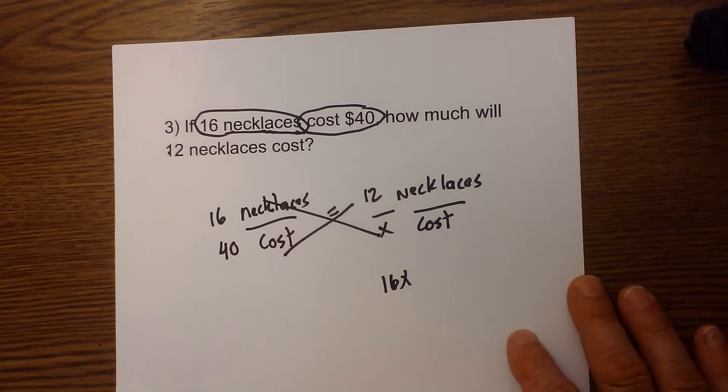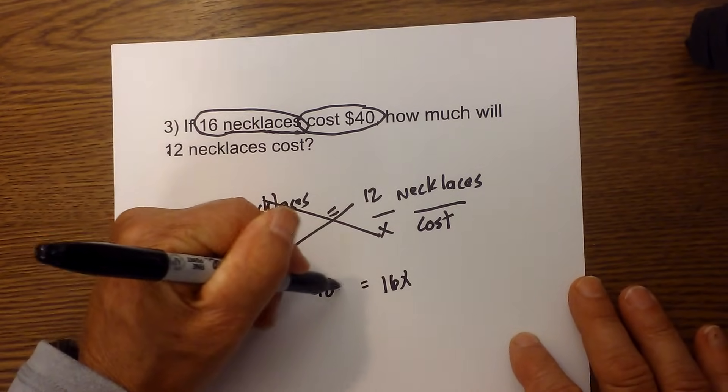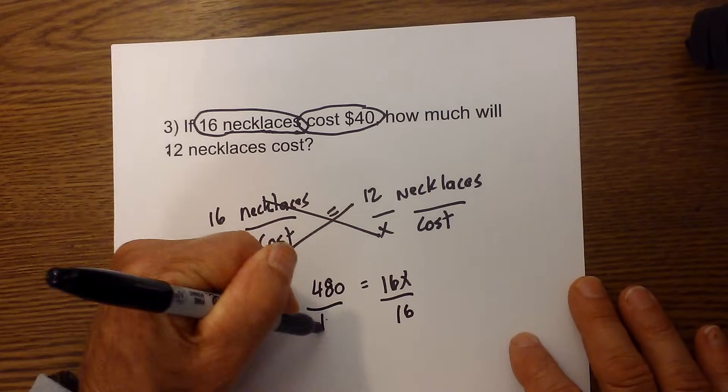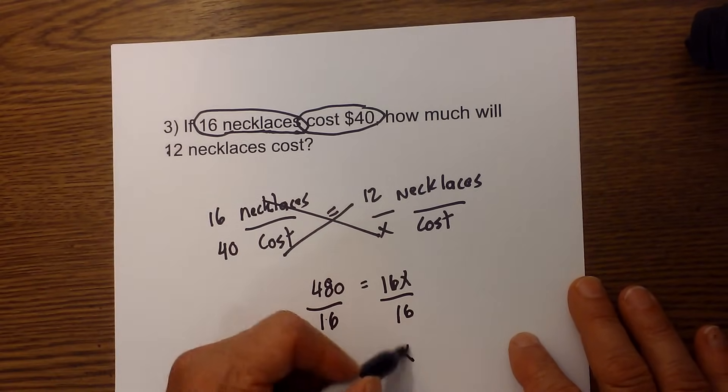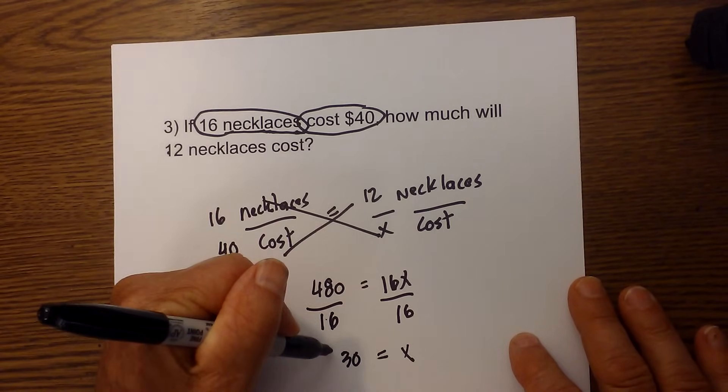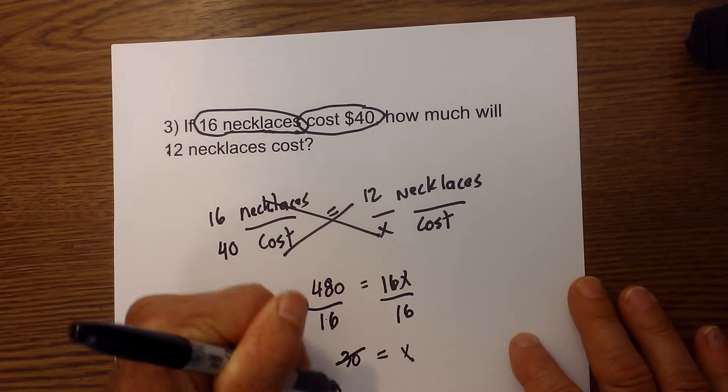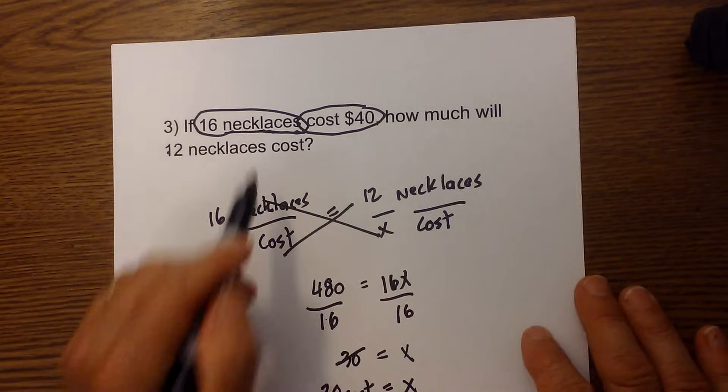Okay, I cross multiply. 16X is equal to 12 times 40, and 12 times 40 is equal to 480. So I will write 480. Divide each side by 16 in order to solve, so X is equal to 480 divided by 16, and 480 divided by 16 is 30. So the cost will be 30.